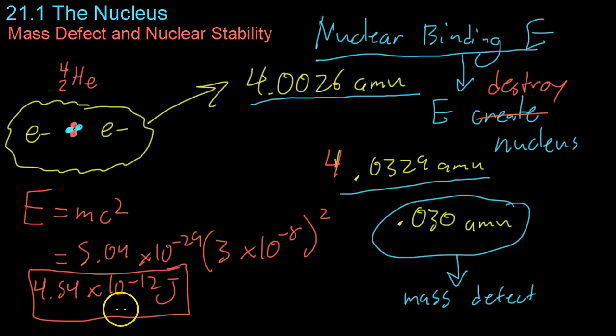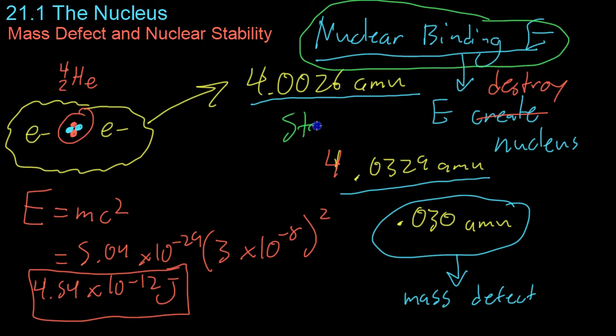And though that may not seem like a lot, remember, you have to concentrate all that energy into the size of a nucleus. Now, the nuclear binding energy is also useful for measuring stability of a nucleus. For example, the higher the energy, the more stable, because if you have a higher binding energy, that means it will require more energy to break it up.